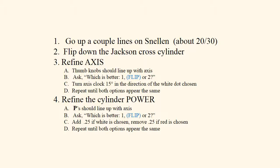Four major steps. One, you go up a couple lines on the Snellen just to use a larger and more comfortable line. Two, you flip down the Jackson Cross Cylinder. Three, refine the axis first, and there are four basic steps to doing that. And four, refine the cylinder power, and another four basic steps to that. Really easy. Let's go over them one by one.